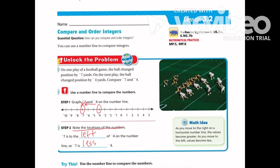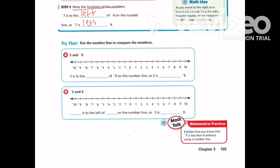Here's my zero. When I go to the right, numbers get greater, but when I go to the left, numbers get less. So let's continue comparing.